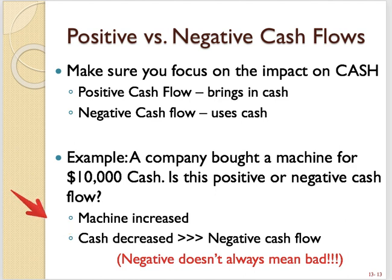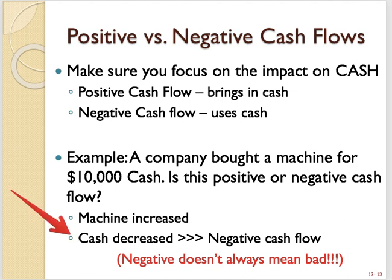A lot of times students get confused and say that's positive because they're focusing on the machine — we got a machine, so our machine balance is going up, yes. But you have to focus on the cash impact. In this case the cash decreased, so it's a negative cash flow. Make sure that when you're analyzing these transactions, you take it real slow, think it through, and figure out what was the impact on cash — not the impact on everything, just the impact on cash.